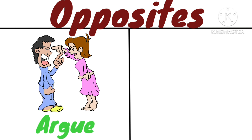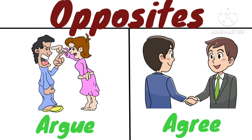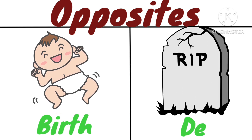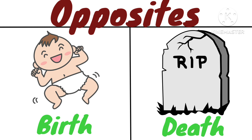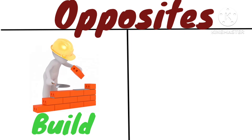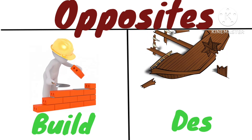Opposite of together is apart. The children are standing together, and the children are standing apart. Opposite of argue is agree. The people are arguing with each other, and the people are agreeing with each other.